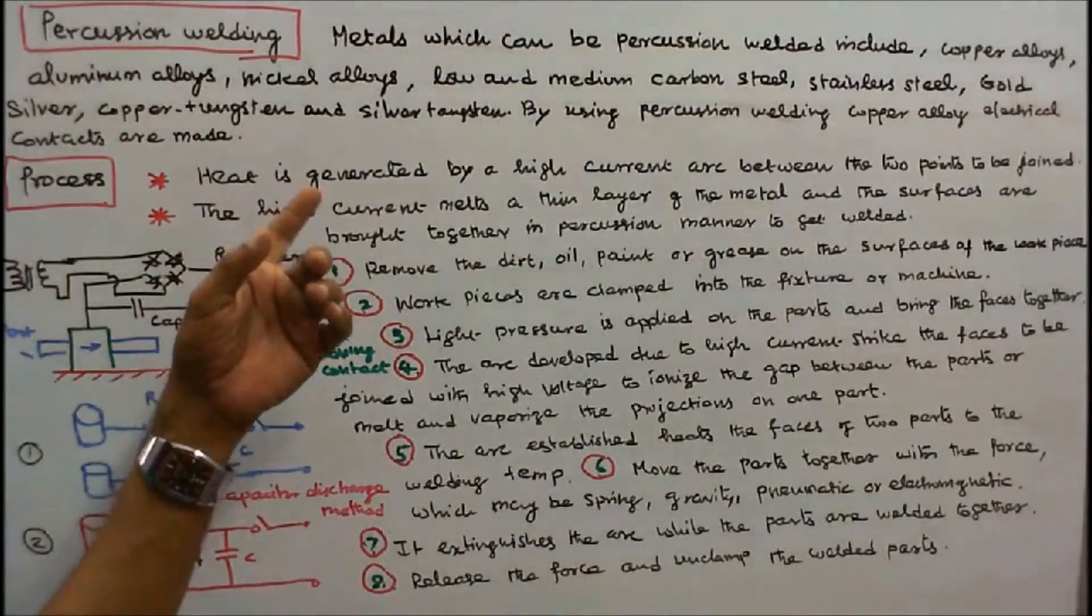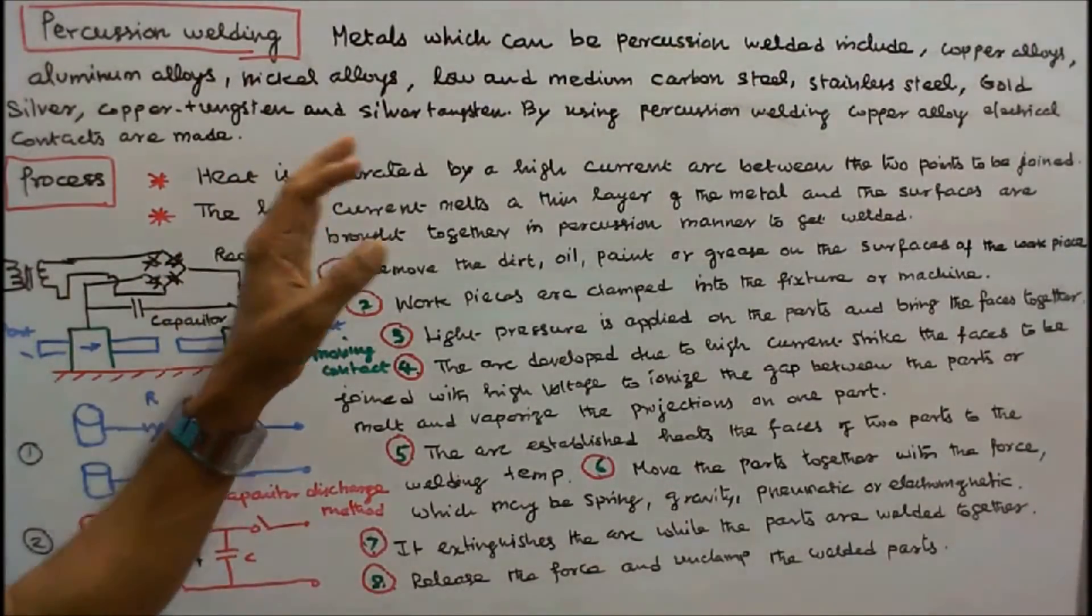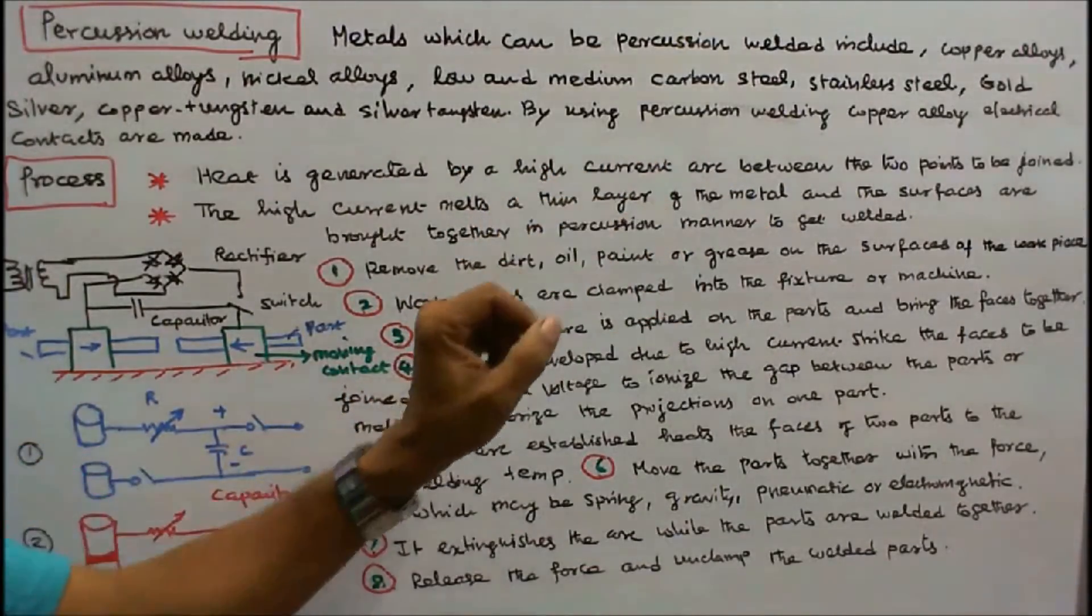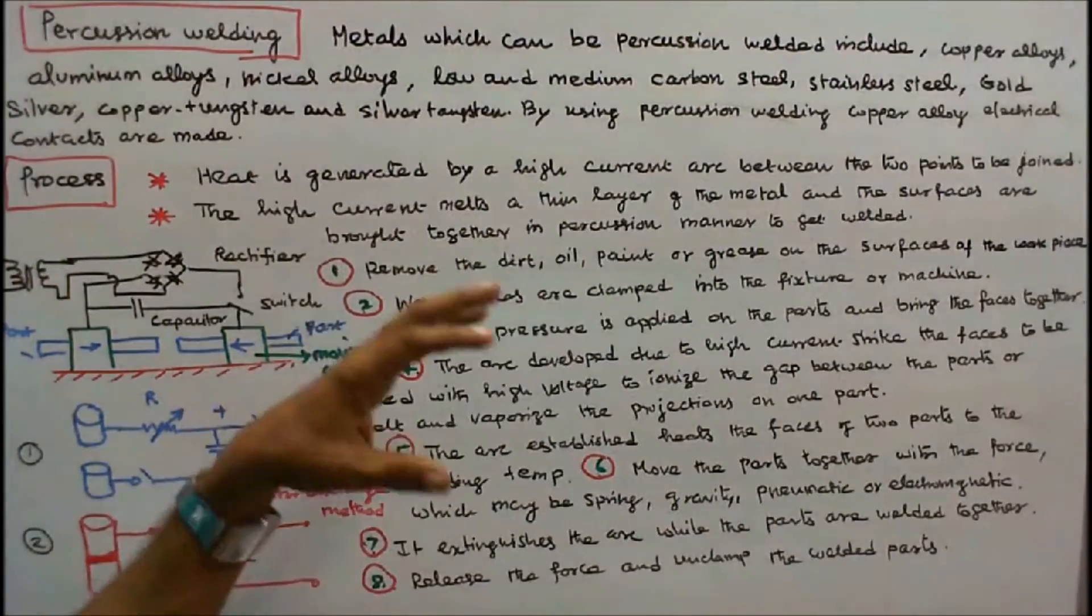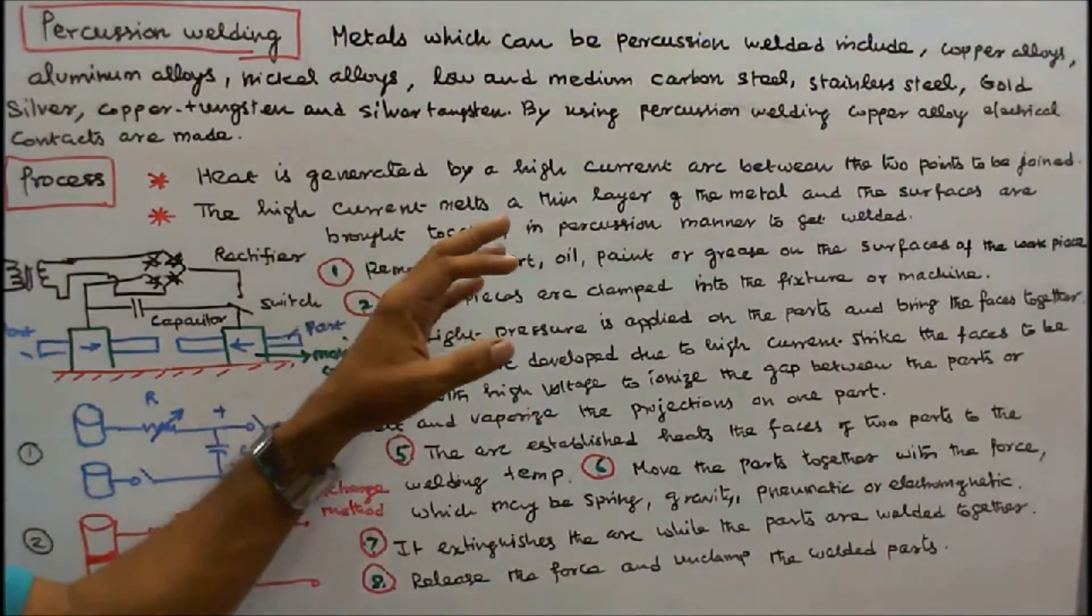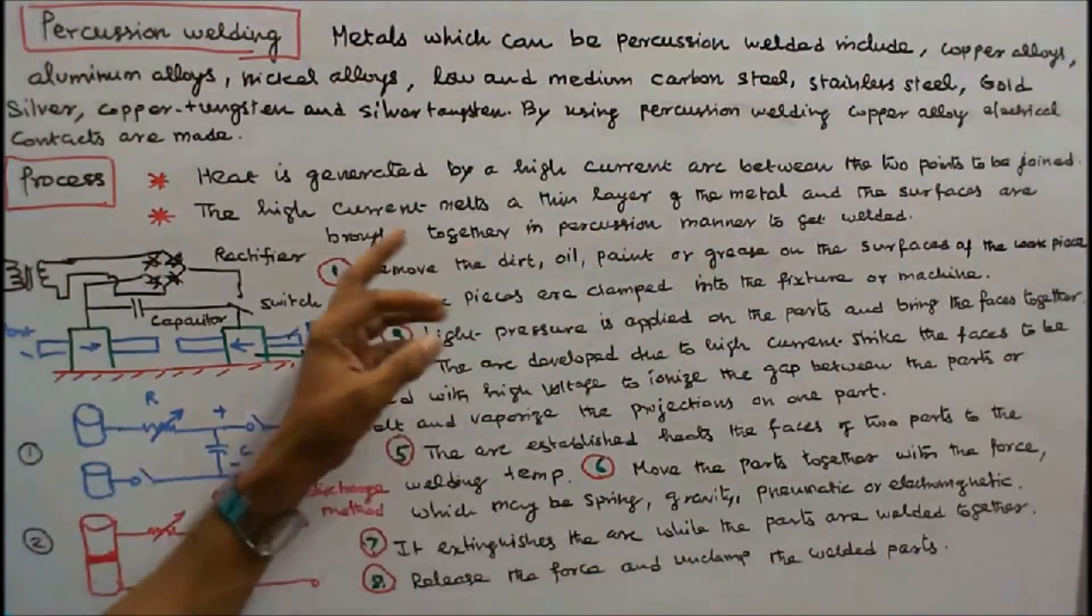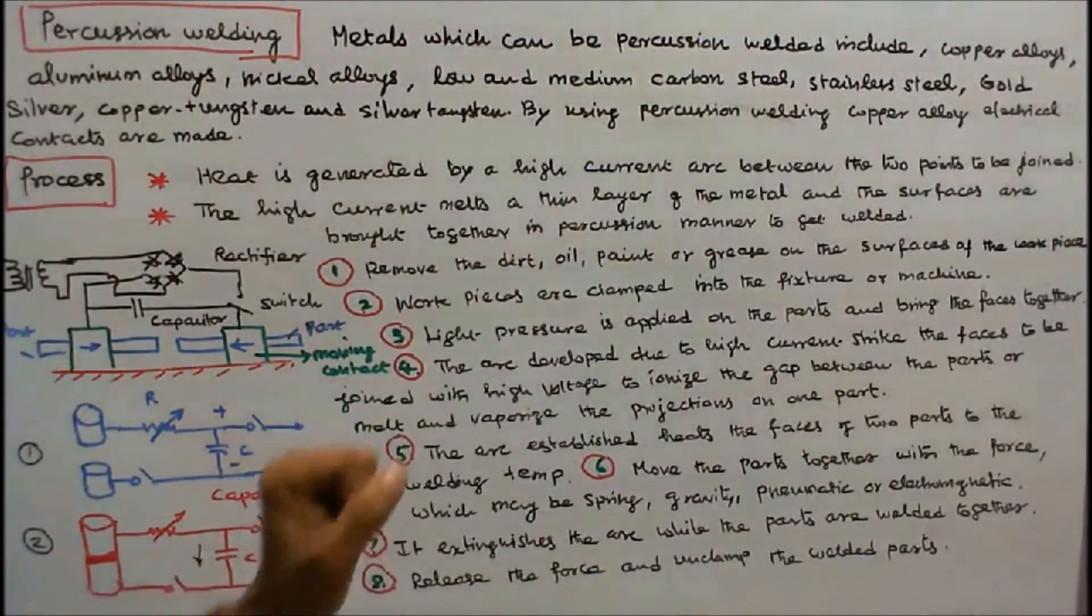In percussion welding, heat is generated by a high current arc between the two points to be joined. The high current melts a thin layer of metal and the surfaces are brought together in percussion manner to get welded.